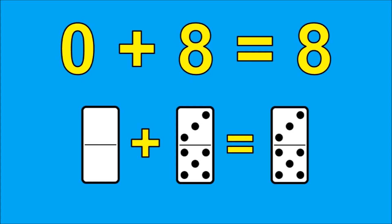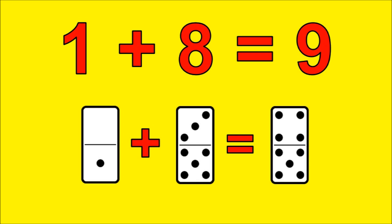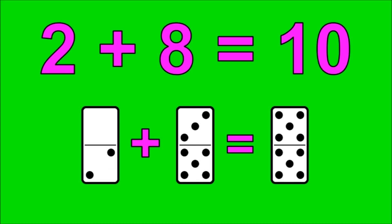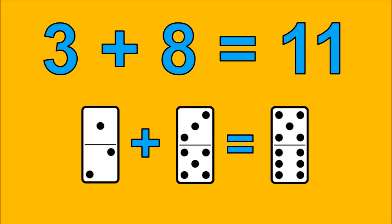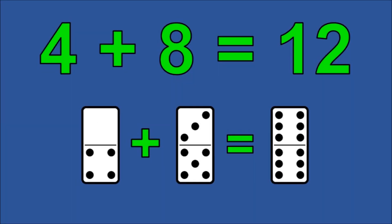Here we go! 0 plus 8 is 8. 1 plus 8 is 9. 2 plus 8 is 10. 3 plus 8 is 11. 4 plus 8 is 12.